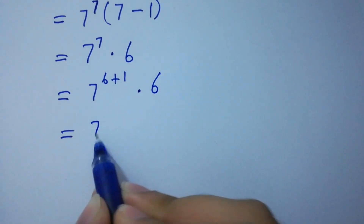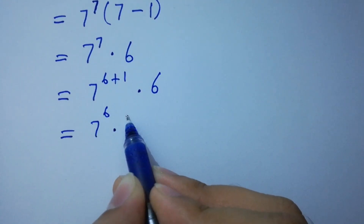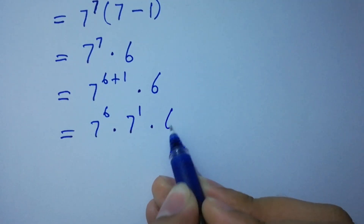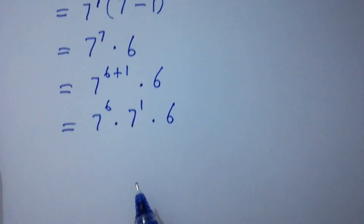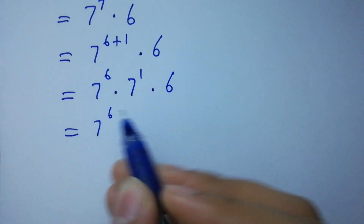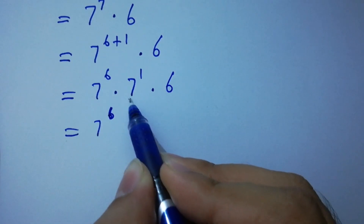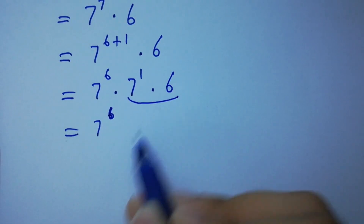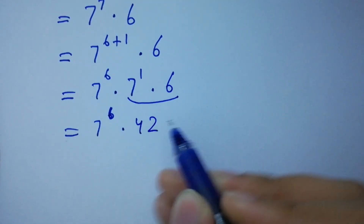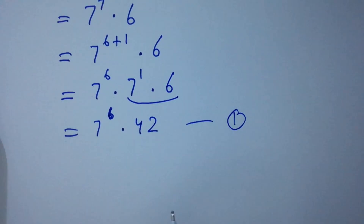7 minus 1 is 6, which is the same as 7 to the power 6 plus 1 times 6. That gives us 7 to the power 6 times 7 to the power 1 times 6, and here we have 7 to the power 6 times 7 times 6, which equals 42. Let this be the first equation.